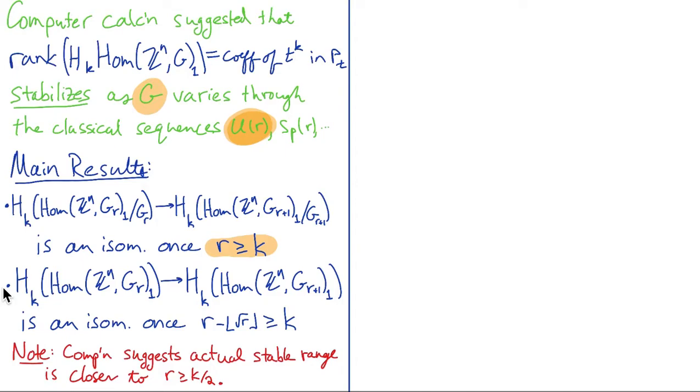And in homology, these maps are isomorphisms once R is at least k. And so then if we don't take the conjugation quotient, if we just look at the space of commuting n-tuples before conjugation, then we again get homological stability. Although the range is not quite as good, you need to go a little bit further. You need to go out until the rank minus the square root of the rank is at least the degree of the homology group you're looking at. Now, neither of these results is likely to be an optimal stable range. The computer calculations we've done suggest that probably these are off by about a factor of two.